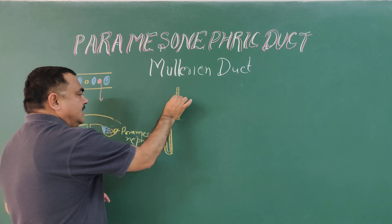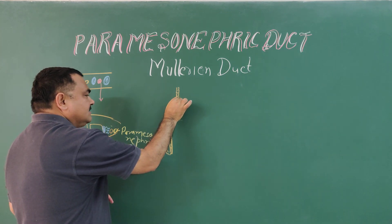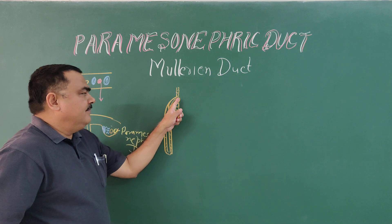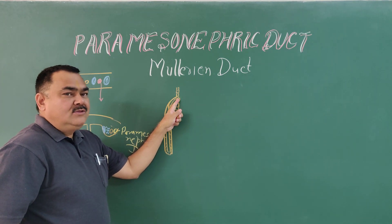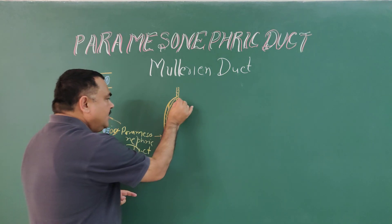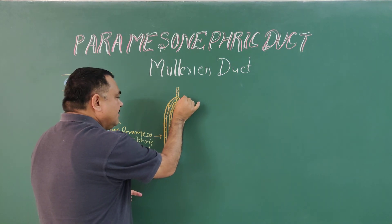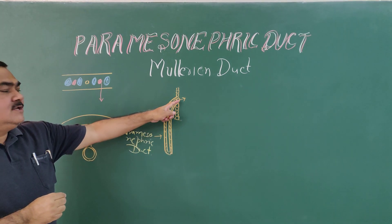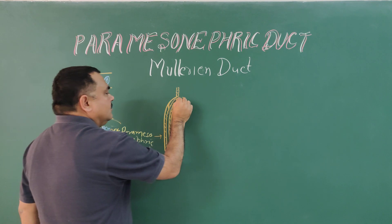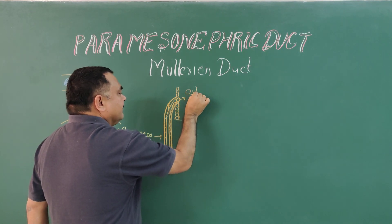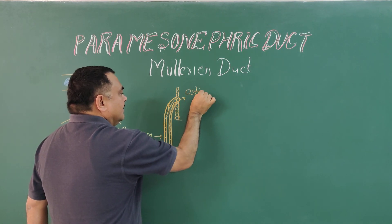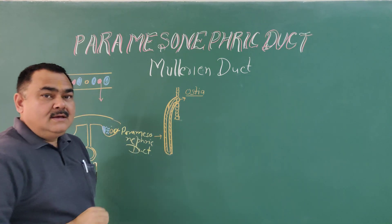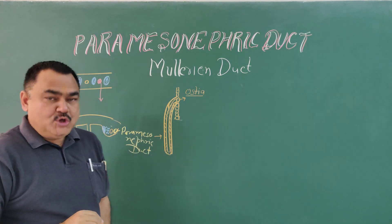And here you can see this end — the upper end — is open, and through this end it communicates with the peritoneal cavity. This opening forms the ostia of the fallopian tube.